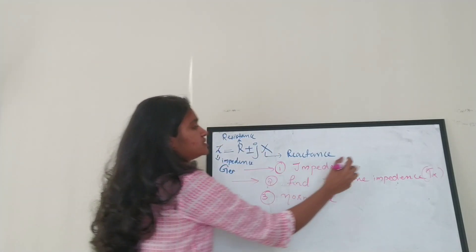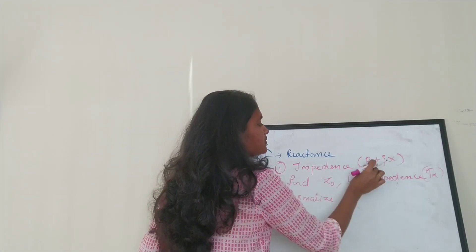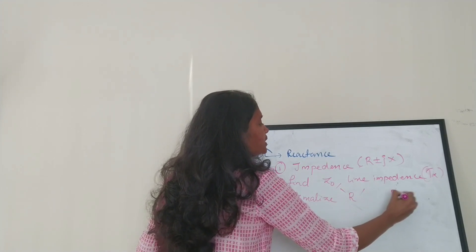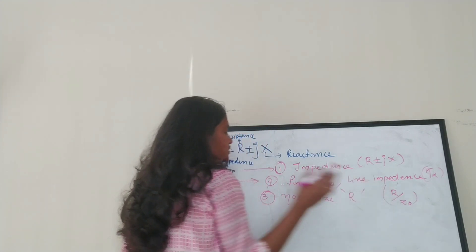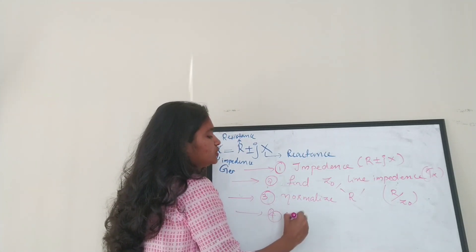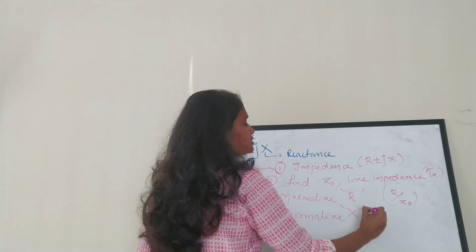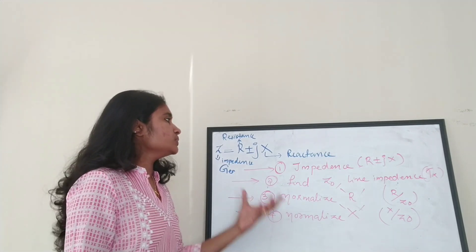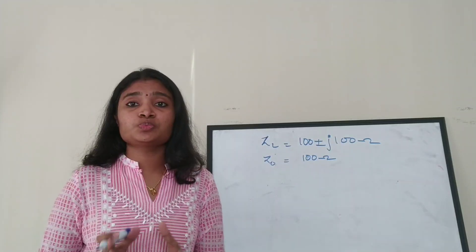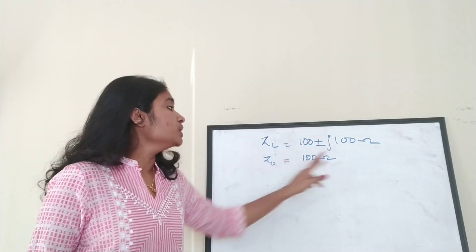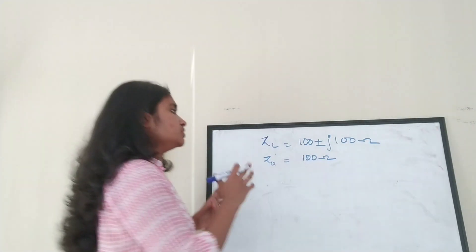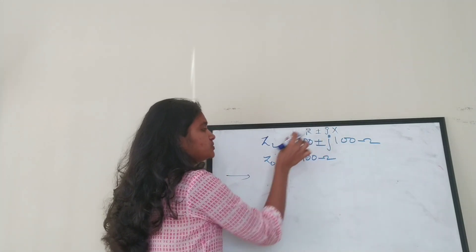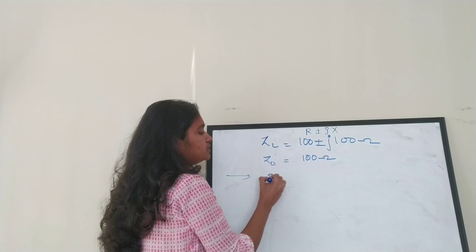Step 3: normalize the resistance part — divide R by Z₀. Step 4: normalize the reactance part — divide X by Z₀ as well. Before plotting any impedance value on the Smith Chart, you must perform these normalization steps.